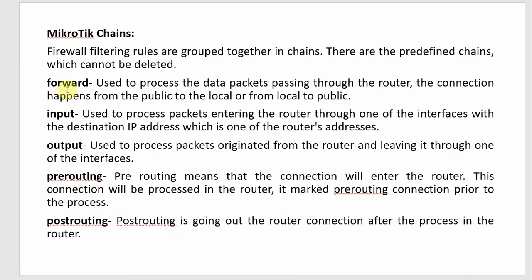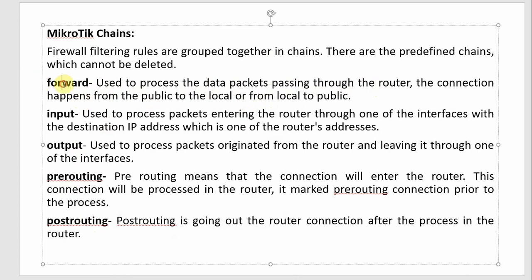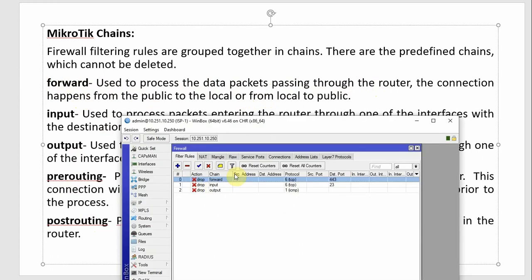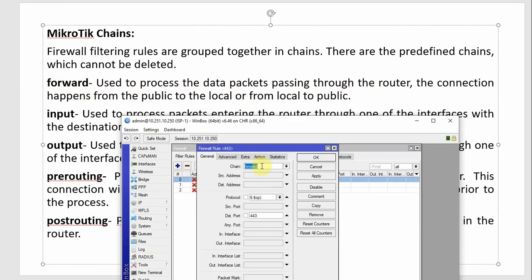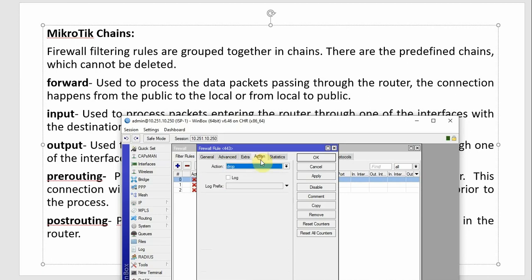Let's look at the Forward chain example. The Forward chain is used to process data packets passing through the router — between public and local interfaces. For example: chain=forward, protocol=TCP, dst-port=443, action=drop. If we want to block HTTPS browsing through this MikroTik router, we use this rule.